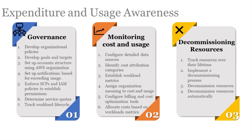Expenditure and Usage Awareness: in order to make informed decisions about where to allocate resources and understand how profitable various business units and products are, it is essential to understand the organization's costs and expenditure drivers. Key factors include Governance — high-level guidelines for managing cloud usage should be established. Develop organizational policies related to creating resources for various units and teams, such as establishing AWS regions in which resources should run, determining storage classes for production versus development, and maximum instance sizes for test/dev accounts.